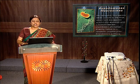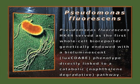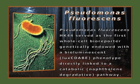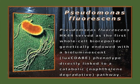Next comes Pseudomonas fluorescens. It served as the first whole-cell bioreporter, genetically endowed with the bioluminescent gene lux CDABE, directly linked to the catabolic degradative pathway. It was the first organism used as a monitor for bioremediation and the first organism to be genetically engineered. This concludes the model organisms of the prokaryote group, containing eubacteria and archaea.